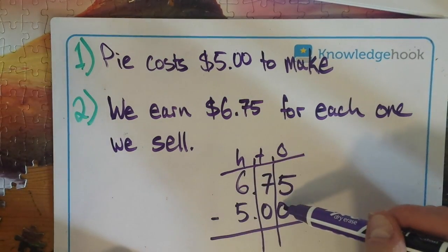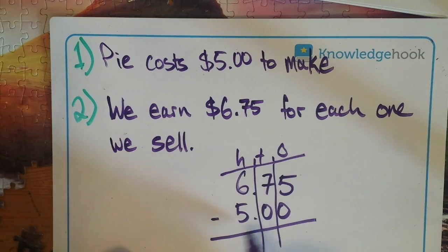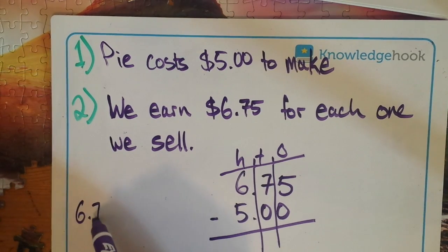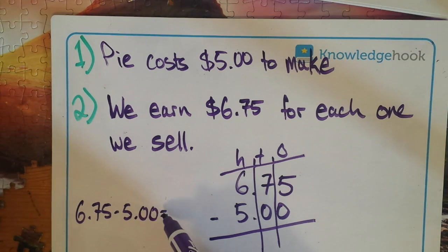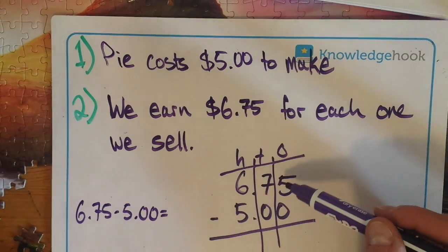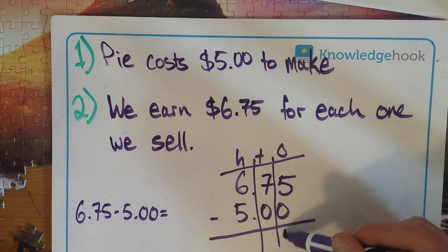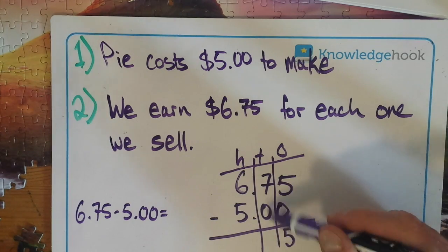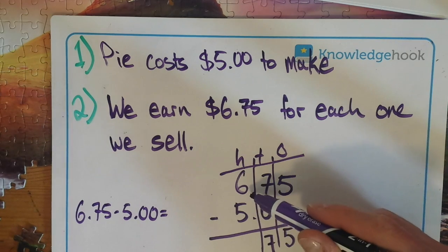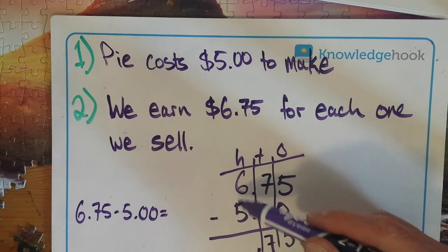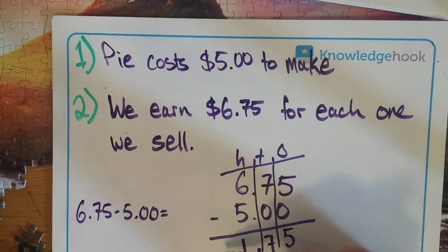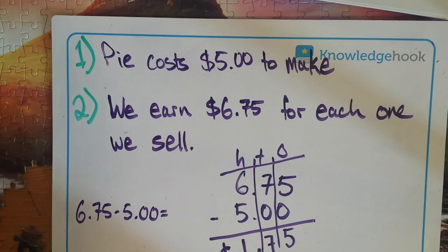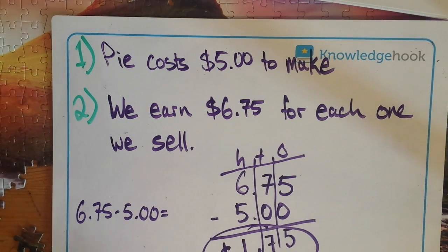In the ones: 5 take away 0. Remembering that the bottom line is the same as an equal sign when doing top-to-bottom — so this is $6.75 minus $5 equals. 5 take away 0 is easy, it doesn't change. Move to the tens: 7 take away 0, still easy. Make sure to remember the decimal stays in the same spot. 6 take away 5 is also pretty easy — 1. So each time I sell a pie, I earn $1.75. I hope I sell a lot of pies!